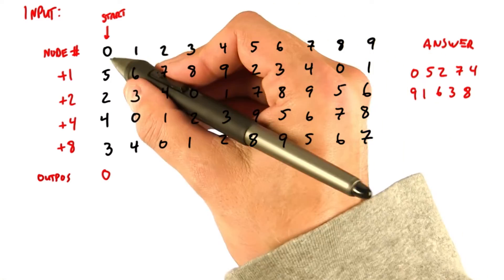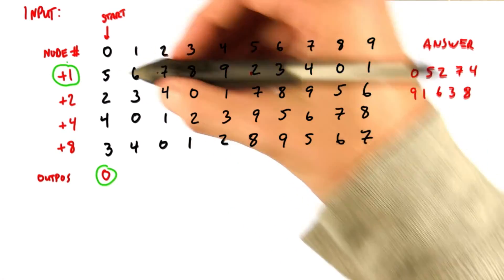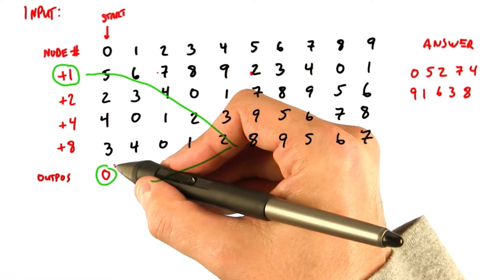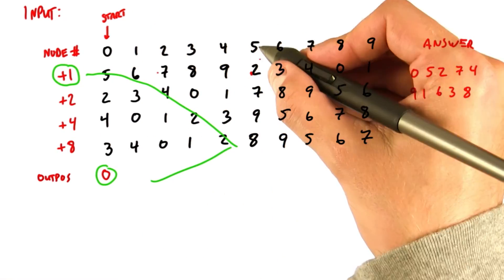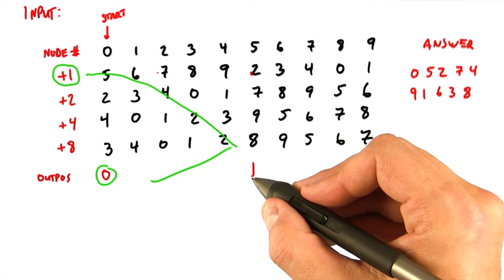So where will node number 5 write its output? That's what we need to fill in here for outpause. It knows that it's coming after node number 0, right here, and it knows that it's coming one hop past node number 0. So we can add these two values together to see that node number 5 will write its output to position number 1 in the output array.